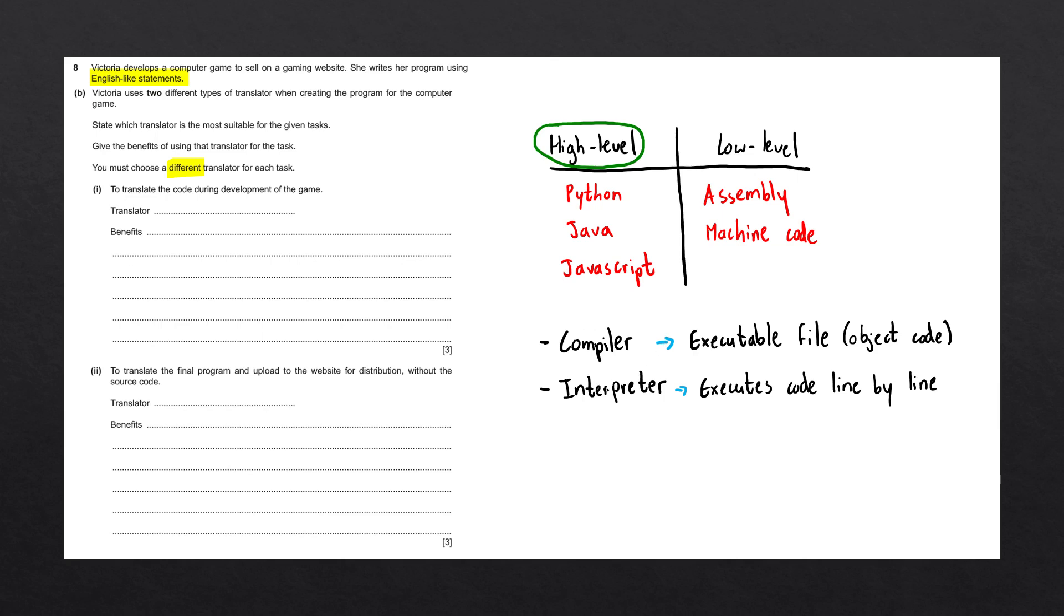For this reason, an interpreter is usually better when translating the code during development. So let's go ahead and write interpreter. The reason we'd want to use an interpreter in this case is because the errors are immediately reported, meaning it is easier to debug the program.